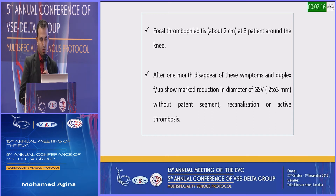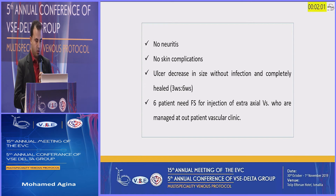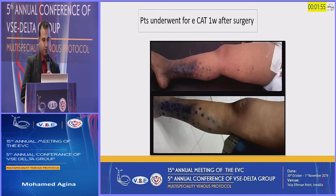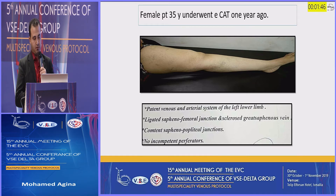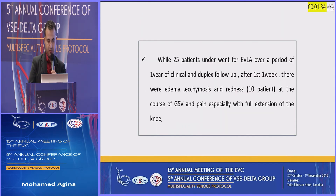After 1 month, these symptoms resolved and duplex follow-up showed marked reduction in diameter of the great saphenous vein to 2–3 mm without patent segment, re-canalization, or active thrombosis. No neuritis, no skin complications. Ulcer decreased in size without infection, with complete healing at 3 to 6 weeks. 60 patients needed foam sclerotherapy as outpatients. This picture shows immediately post-operative appearance, and this patient underwent ECAT one week after surgery. A female patient, 35 years old, underwent ECAT one year ago; duplex shows ligated saphenofemoral junction and sclerosed great saphenous vein. Another picture shows a patient with venous ulcer pre-ECAT and at 2 weeks, 1 month, and 6 weeks after ECAT.